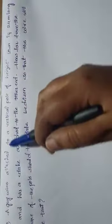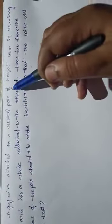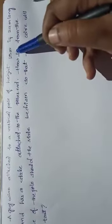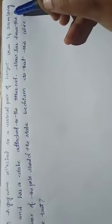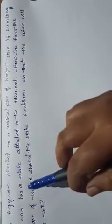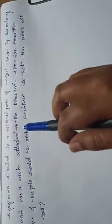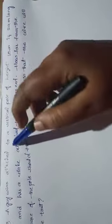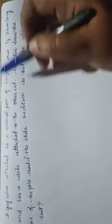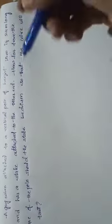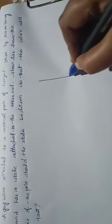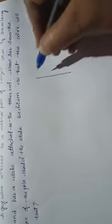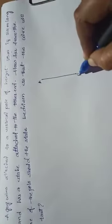A guy wire attached to a vertical pole of height 18 meters is 20 meters long and has a stack attached to the other end. Given pole height is 18 meters. Let A be the top, and AB is the pole of 18 meters.